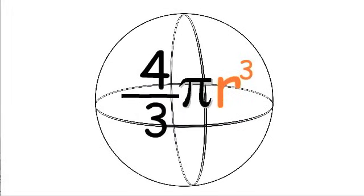4 over 3 pi r cubed gives you the volume of a sphere, but where does the formula come from?